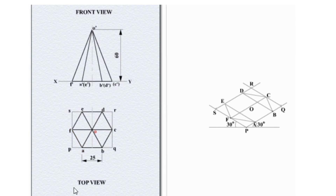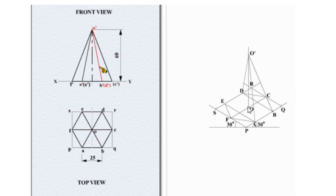Mark the apex point at the midpoint of the square — mark it as O. The axis height is 60mm, so mark the distance from point capital O upward by 60mm and name that point as O-dash.